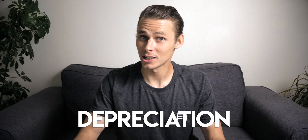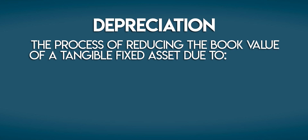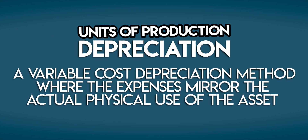Hey there, I'm James, you're watching Accounting Stuff, and in this video you'll find out how to calculate depreciation using the units of production method. Depreciation is the process of reducing the book value of a tangible fixed asset due to use, wear and tear, the passing of time, or obsolescence. The units of production method is a variable cost depreciation method where expenses mirror the actual physical use of the asset.